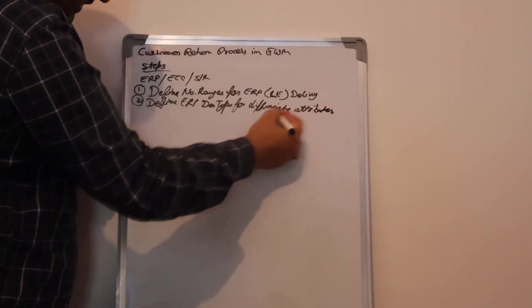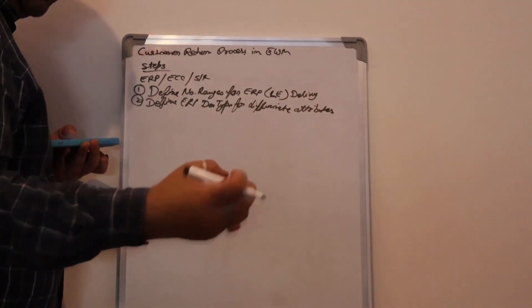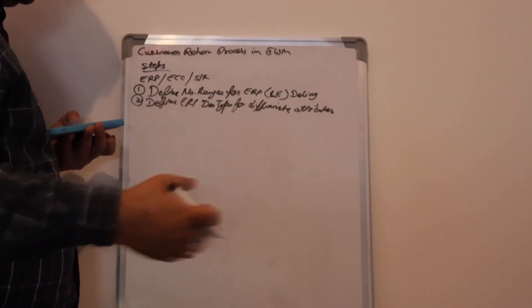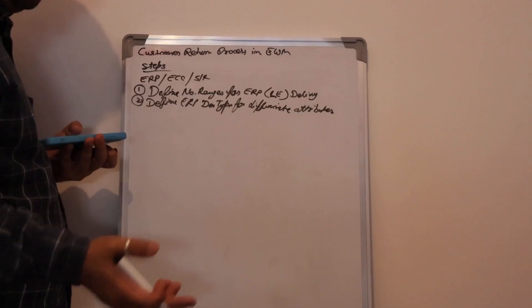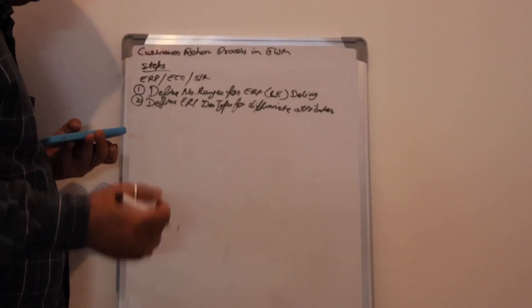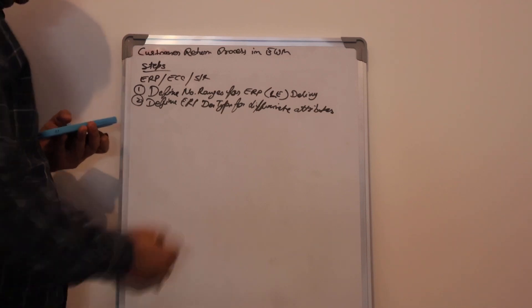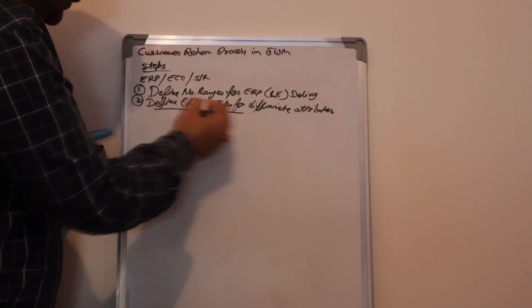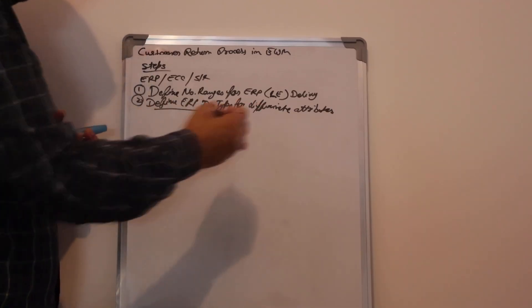Attributes means properties. How will the system differentiate? Is this a return or is this a customer delivery? This is the return delivery, not normal delivery, not normal inbound delivery — this is the return delivery. How will the system segregate that? Through the document type. These are the header documents.